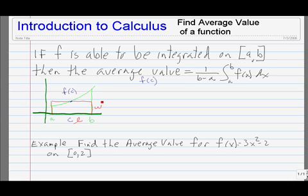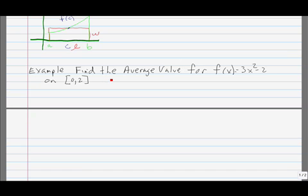Let's look at a specific example. To find the average value, we're going to take the integral of 3x squared minus 2 from 0 to 2, and divide it by 1 over b minus a, which is 2 minus 0.